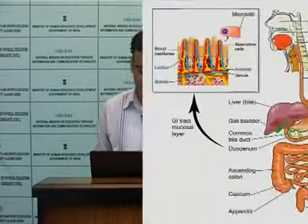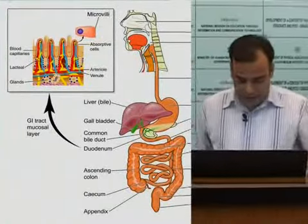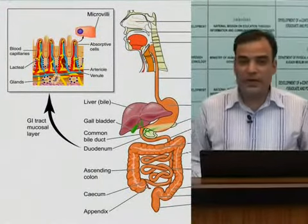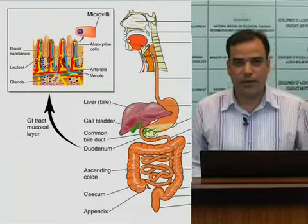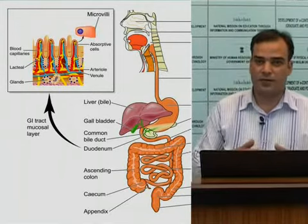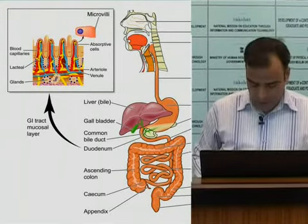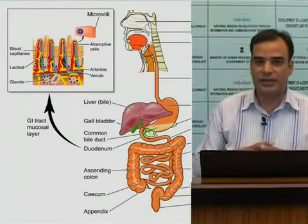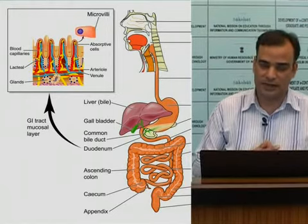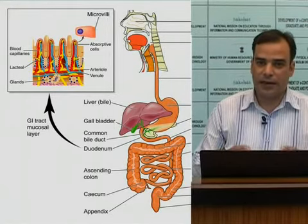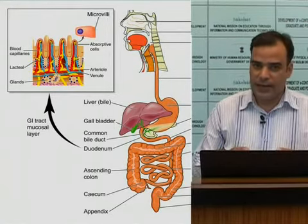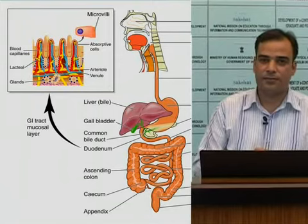Let us now see the second function — secretions. Many different secretions take place in our GIT. Let us start from the mouth. In the mouth, there is a secretion called saliva, and this is secreted by glands called salivary glands.